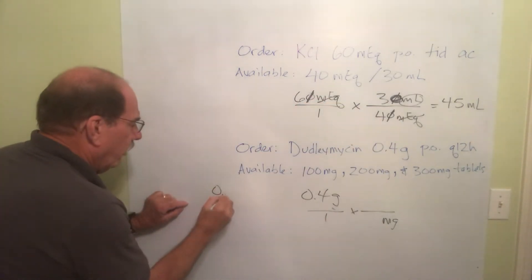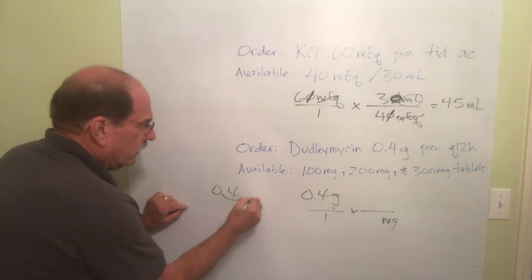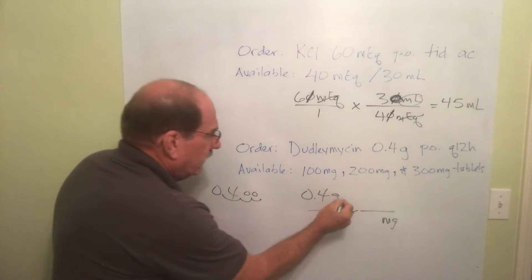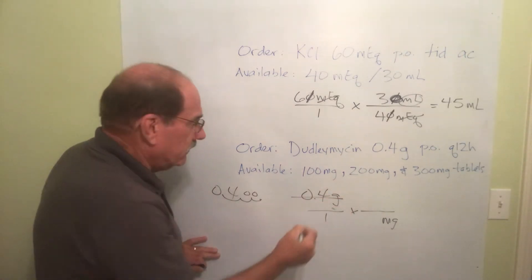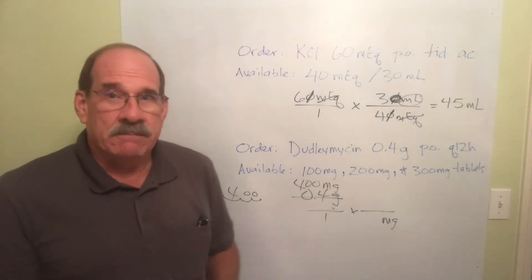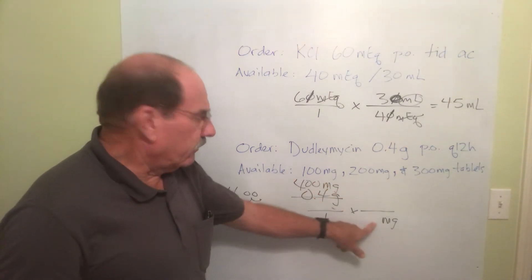The answer, well not the answer, but that number 0.4 grams becomes 400 milligrams. So now what I put here, realize doing some more air math here. There's air guitar, there's air quotes, now there's air math.